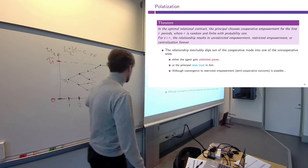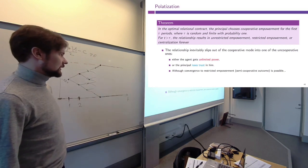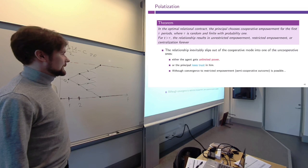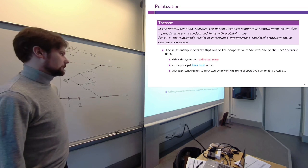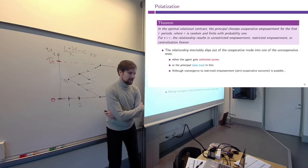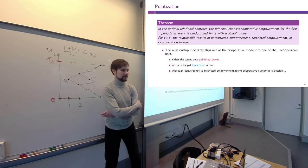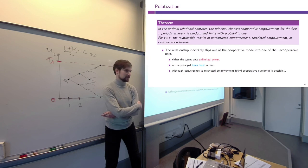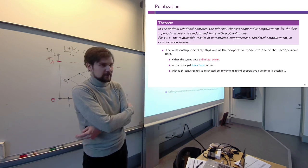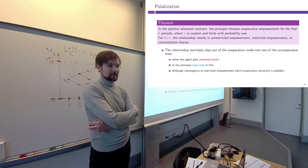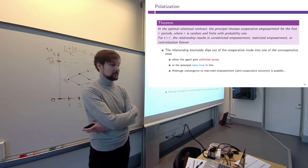You see this is a similar convergence result, and we do not even need the principal's commitment power for it to happen. The inefficient behavior of the principal — for example, selecting centralization and the default project always — can be sustained by the belief that the agent would never tell the truth about which project is available. This makes sense because the agent always wants to select their preferred project rather than reveal that the principal-preferred project is actually available.